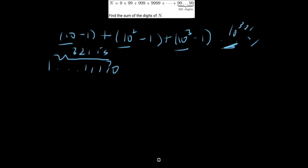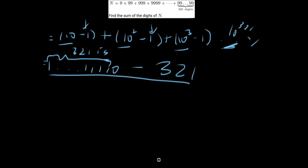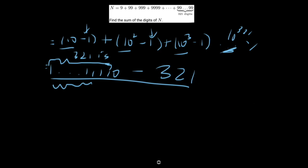Now we can't disregard the 1s — there are 321 of them to subtract, so we subtract 321. The last four digits of our string of ones are 1110, and 1110 minus 321 gives us 789.